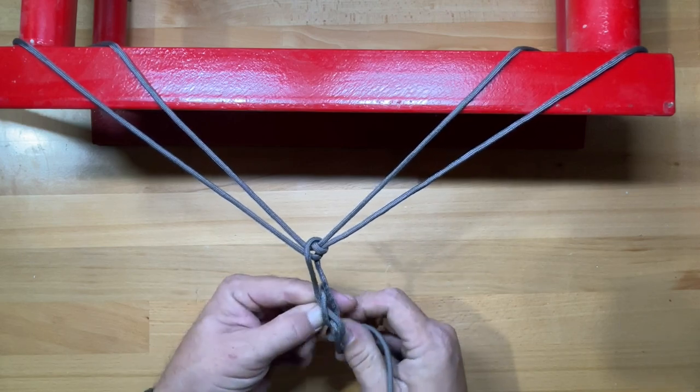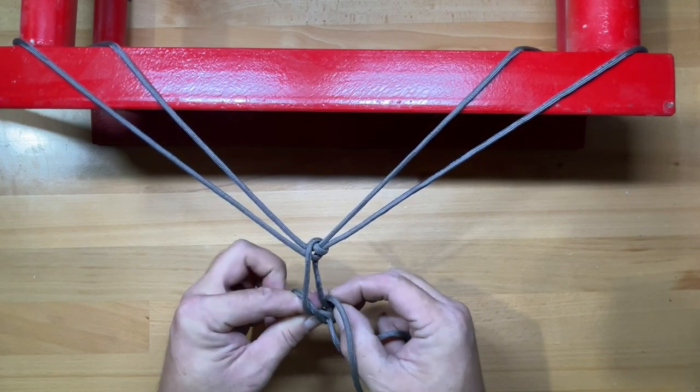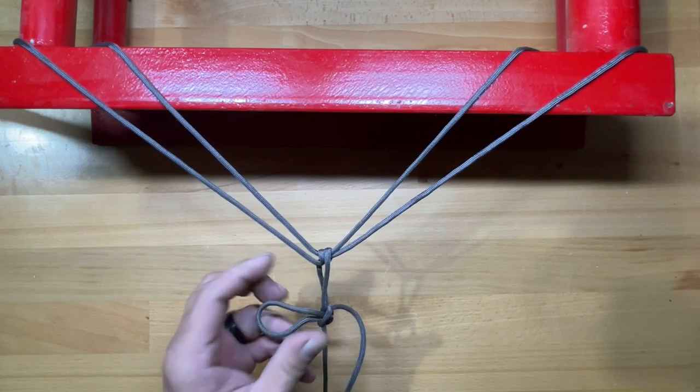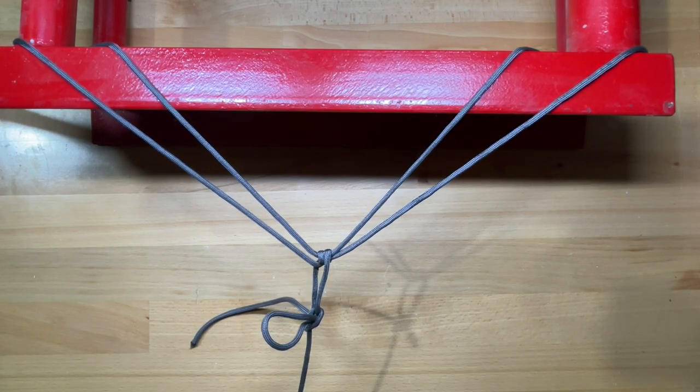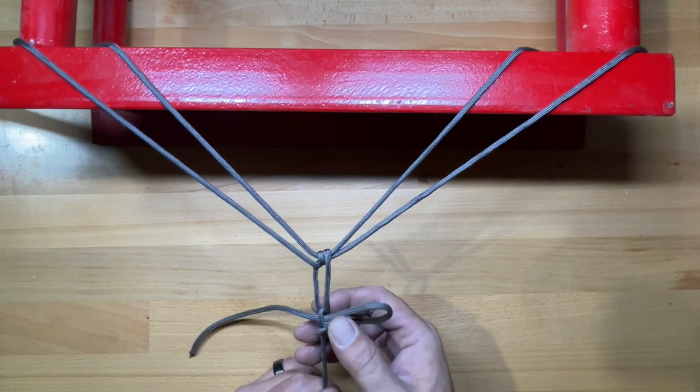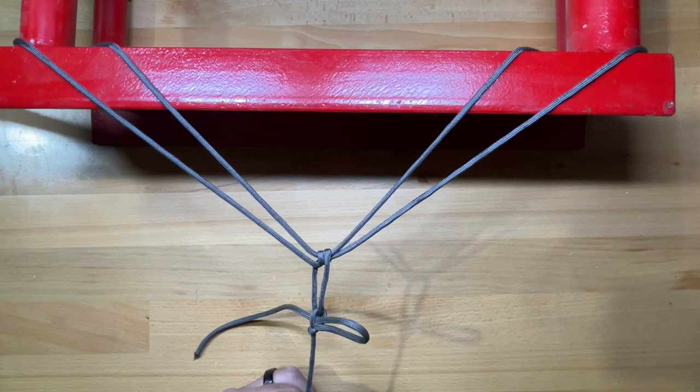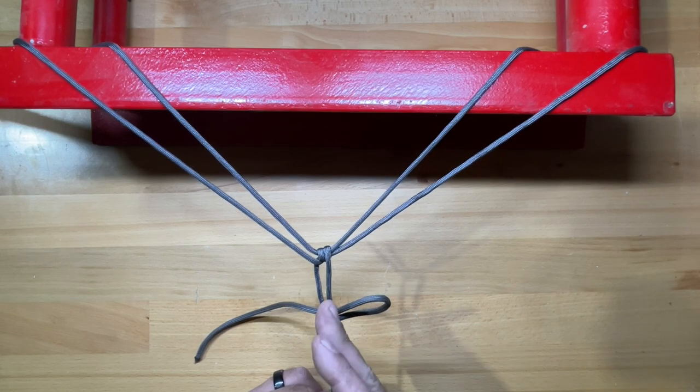So this is a little tough to see on this smaller string. If you want to see a little better how to do this on a larger rope where it's easier to follow, I'll put a video link for that right here. You can use a different knot here. You can always use a bowline or something like that to tie this one off.